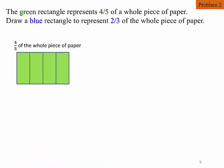This is the problem. The green rectangle represents four-fifths of a whole piece of paper. The task is to draw a blue rectangle to represent two-thirds of the whole piece of paper.